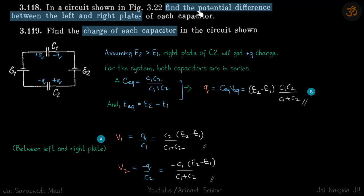Now we need to find the potential difference between the left and right plates. The potential difference from left to right is Q/C1. That is the potential difference across capacitor 1.